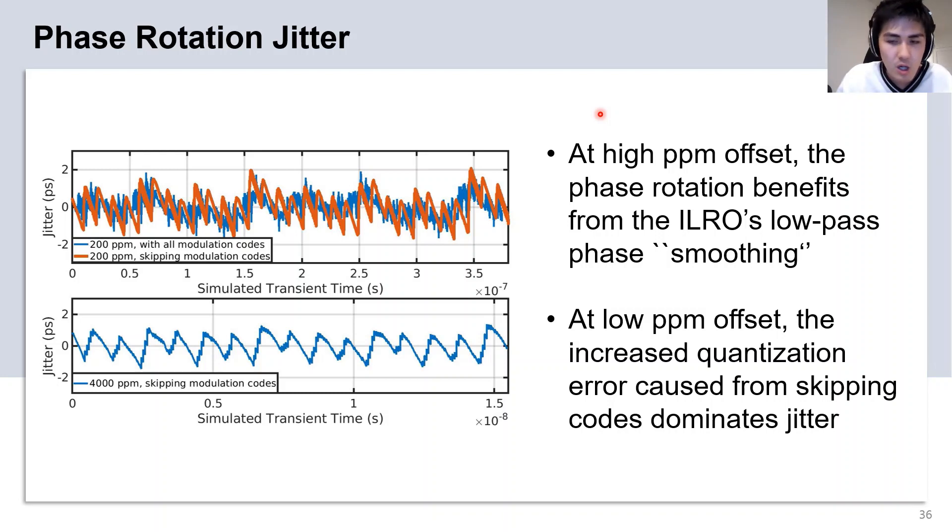However, at low ppm frequency offset by skipping modulation codes, we increase the quantization error, which dominates the output phase rotation jitter.